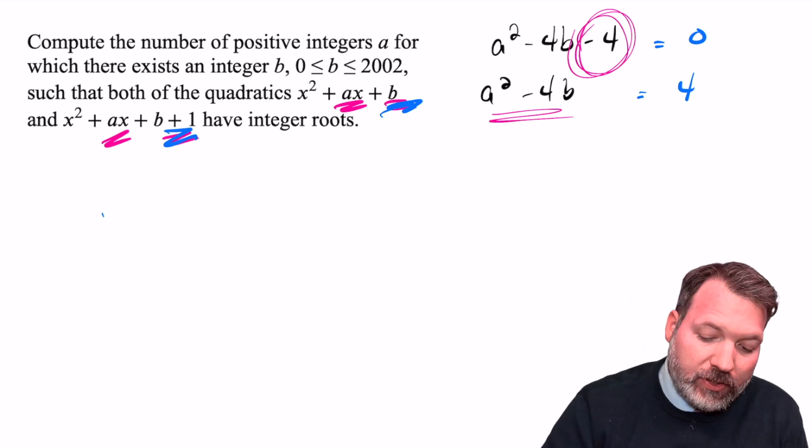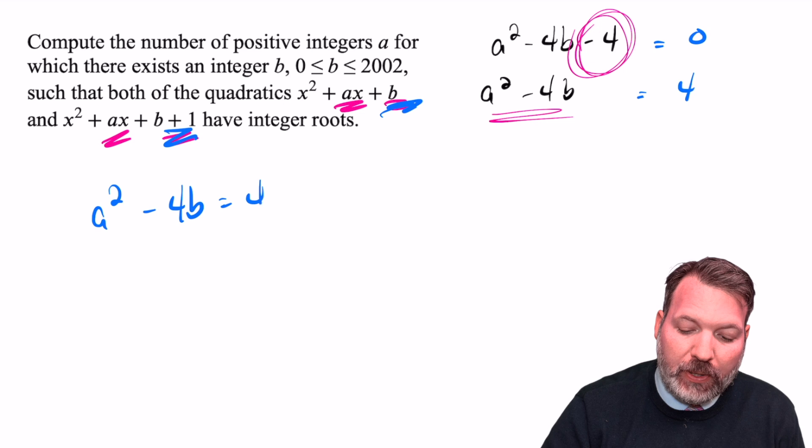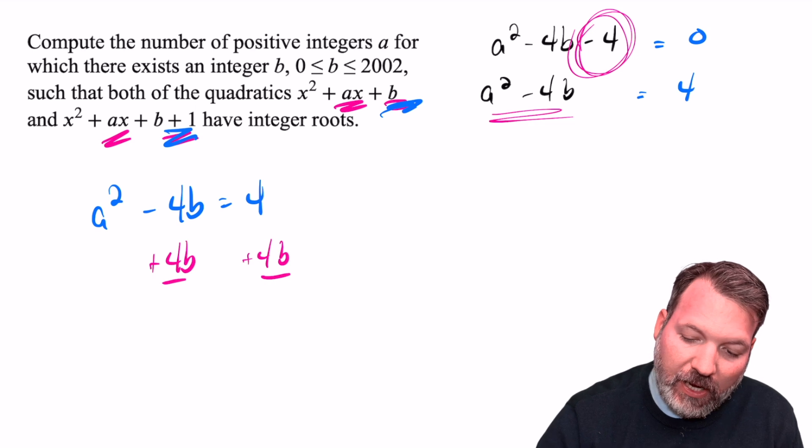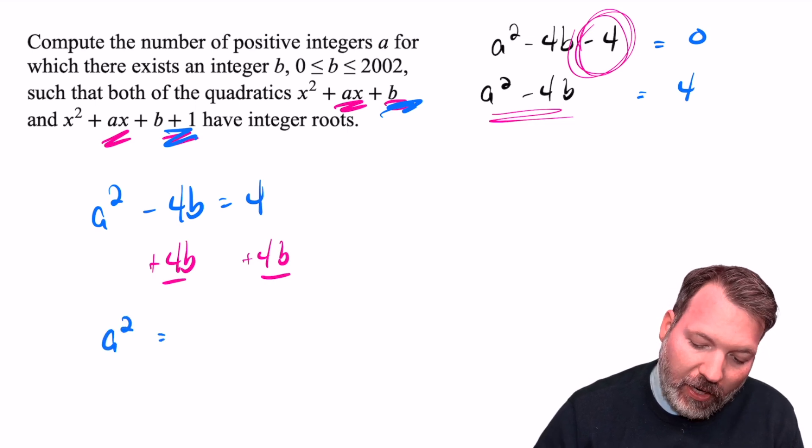And so we can tell that what's really happening here is A² - 4B must be equal to 4. With a little bit of manipulation, we can get the variables onto two different sides, and you're going to see something interesting happen.